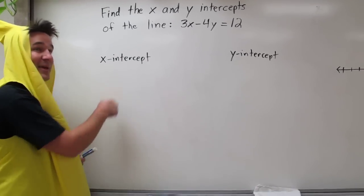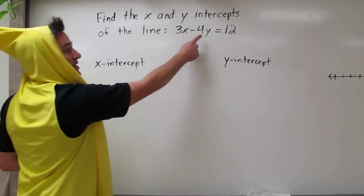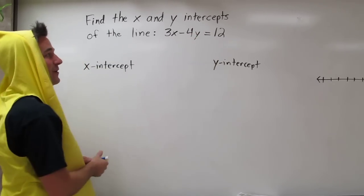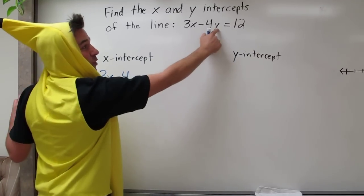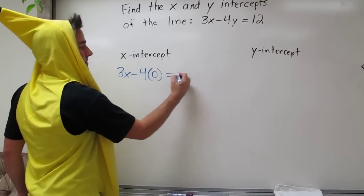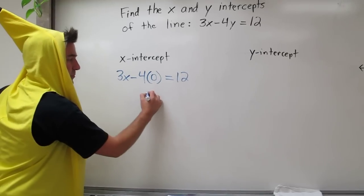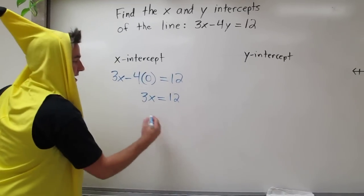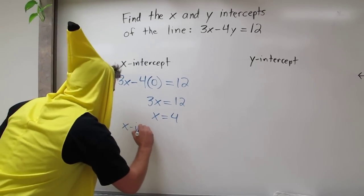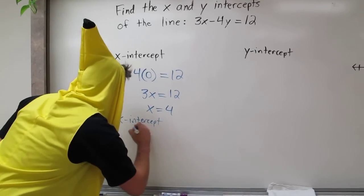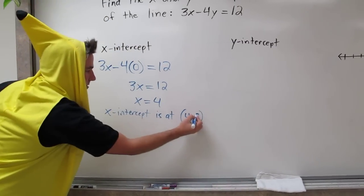Now, in order to be an x-intercept, the y-coordinate has to be 0. So what we can do is plug in a 0 for y and solve for x. So, 3x minus 4 times 0 equals 12. Since 4 times 0 is just 0, we end up with 3x equals 12, and x equals 4. That means our x-intercept is at 4, 0.